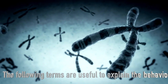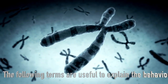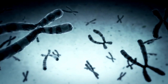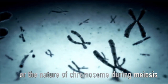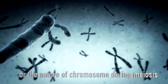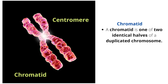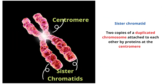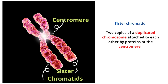The following terms are useful to explain the behavior or the nature of chromosomes during meiosis. Chromatid: a chromatid is one of two identical halves of a duplicated chromosome. Sister chromatid: two copies of a duplicated chromosome attached to each other by proteins at the centromere.